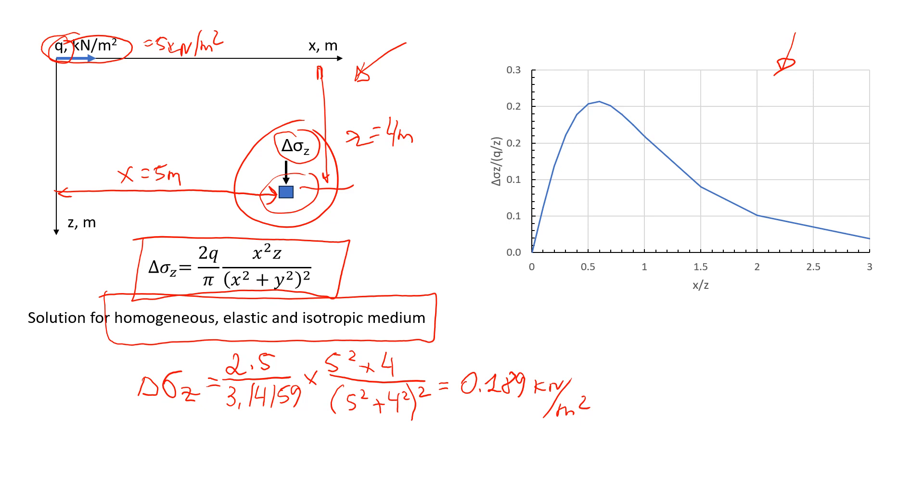Let's now see how we can use this graphical solution. So we're not going to use the formula anymore. We're just going to use this plot. I plotted it as x over z. And on this axis, we have delta sigma z. So that's what we need to find. Divided by q over z.